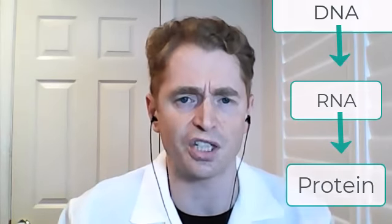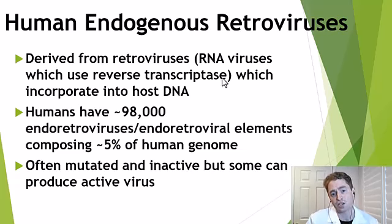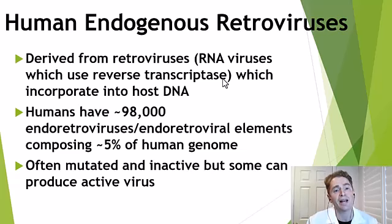Without being too technical, our genetic material is DNA, which is transcribed by the cellular machinery into RNA — ribonucleic acid — which is then translated to proteins that function in the cell. But retroviruses work in reverse, hence retro. Their genetic material is RNA, and they use an enzyme called reverse transcriptase, which then makes DNA that can incorporate into the host cell genome and use our machinery to make copies of itself and spread. There are many retroviruses, the most famous being HIV.